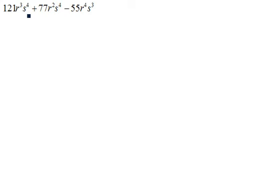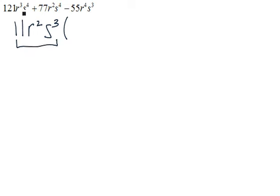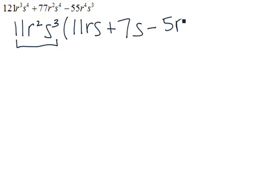So first, we're going to take out any common factors that we see. All of the coefficients have a multiple of 11, so we'll take that out. They also have a multiple of R squared and a multiple of S cubed. So if we take this common factor out of each term, we're left with 11RS plus 7S minus 5R squared.